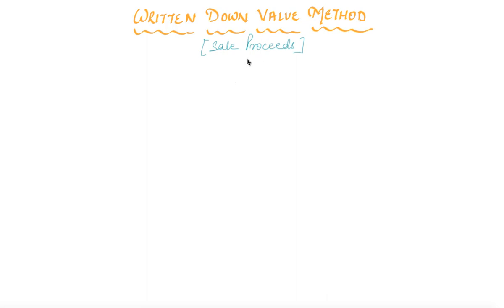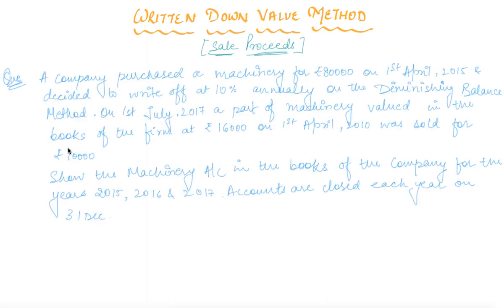In this question, one additional thing is to be covered: what will be the treatment in case sale proceeds are involved — that is, when the machinery you bought is sold, or a part of the machinery is sold. We will learn how to compute the profit or loss, how the depreciation is to be computed on it, and where the profit or loss is to be settled.